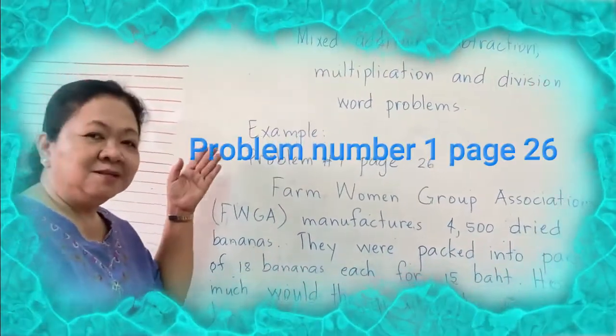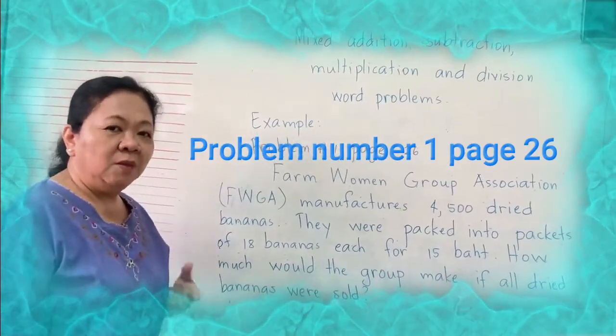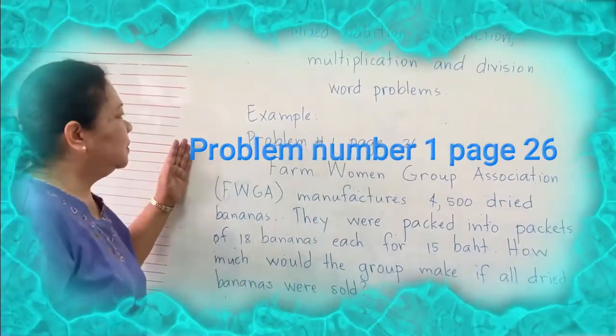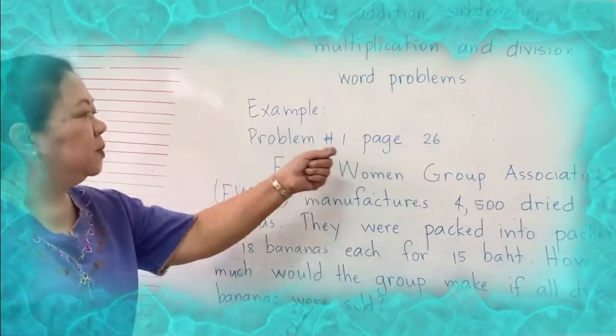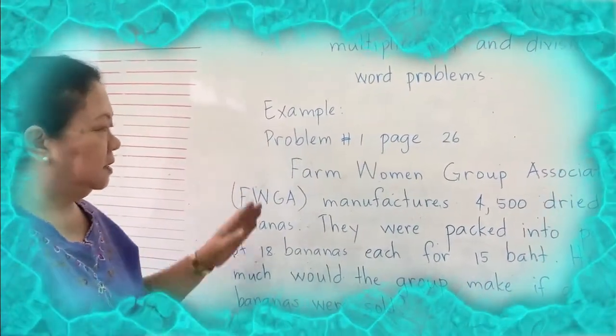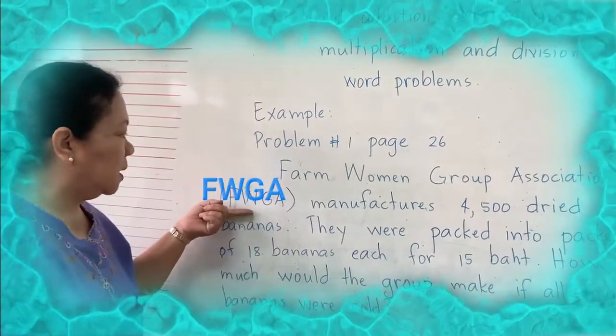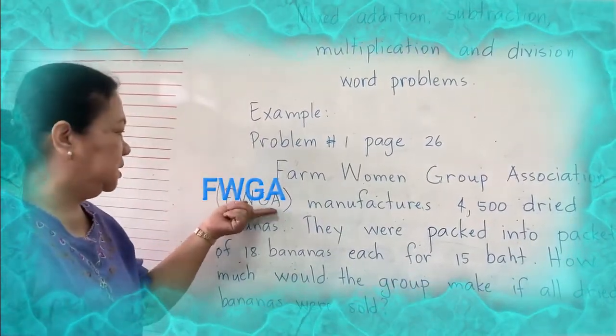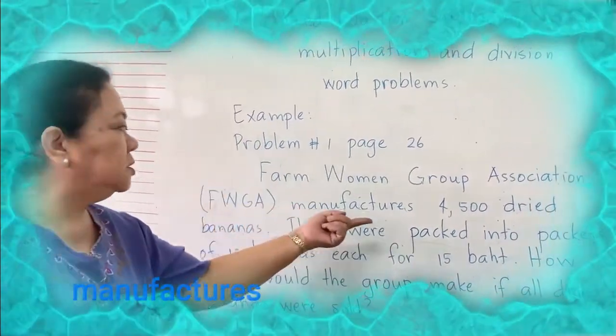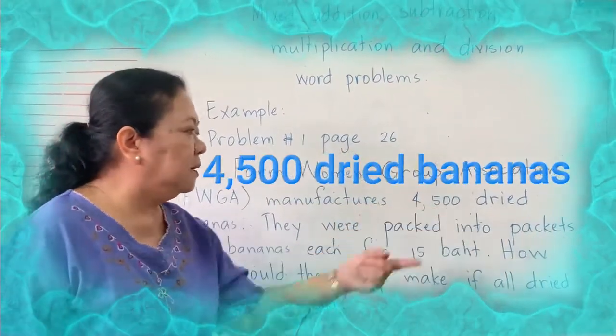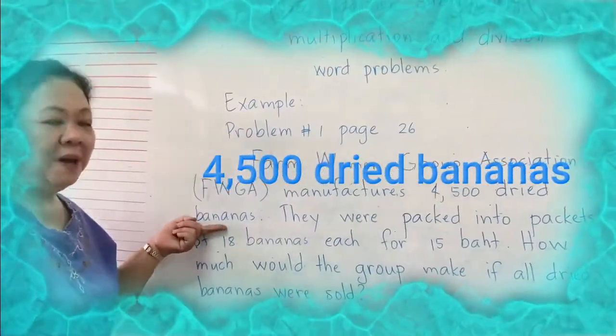I already solved number one for you and I will explain it. This is problem number one, page 26. Farm Women Group Association, or in short FWGA, manufactures 4,500 dried bananas.